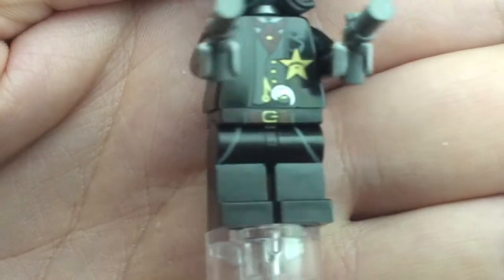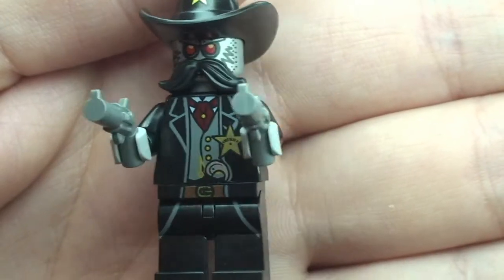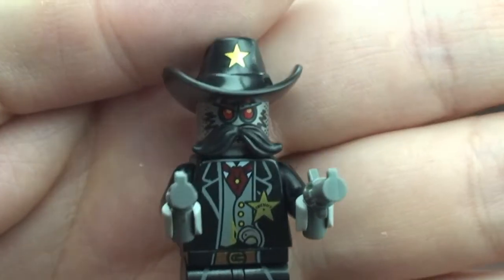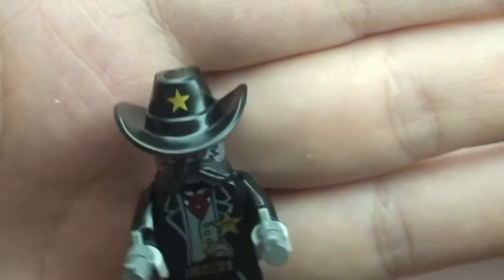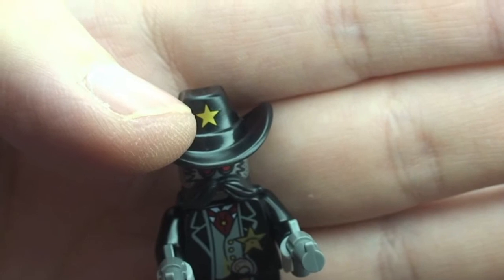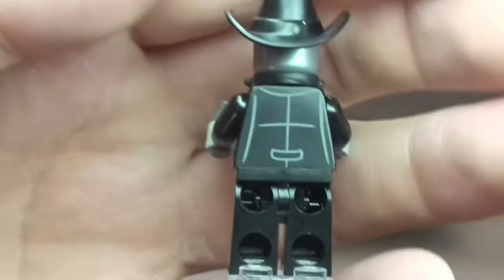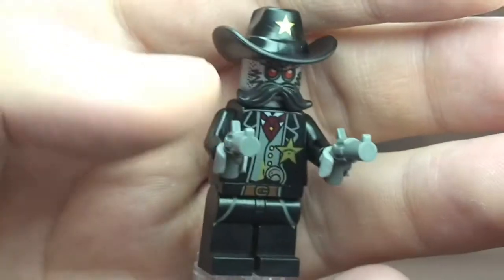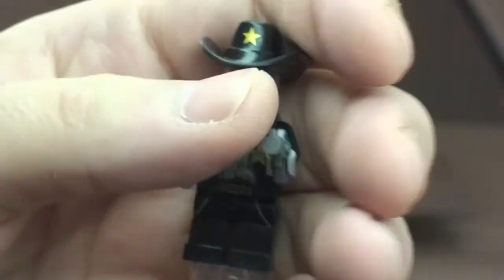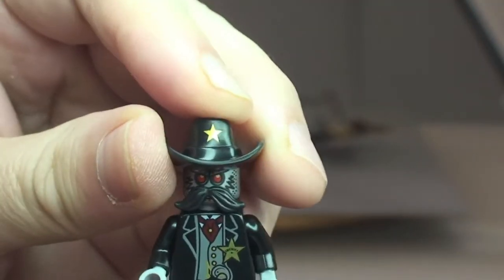Nothing to the front of the torso. And that face there with the mustache. Again the cowboy hat with the gold star on there, the sheriff's star. You can see that rear torso print and he comes with these two pistols. So let's just remove that hat.